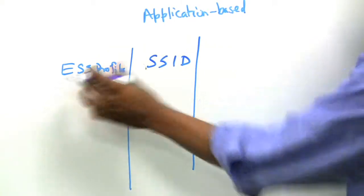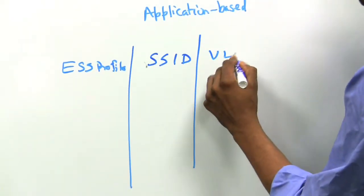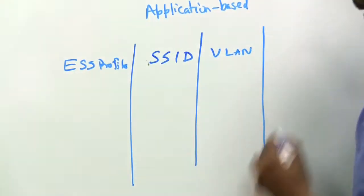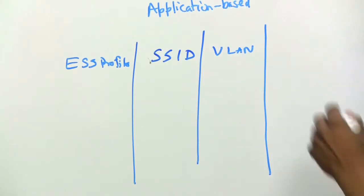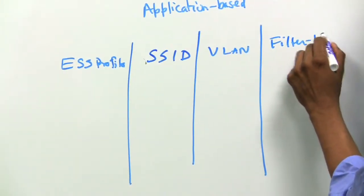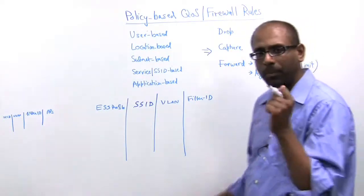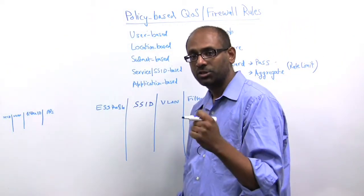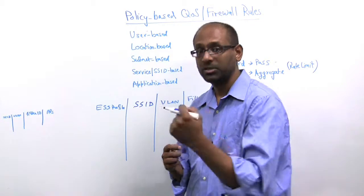For each ESS profile, you can map it to a VLAN, a virtual LAN. You can also assign something called a filter ID, which is essentially a policy tag that we associate with every device that connects to a profile.